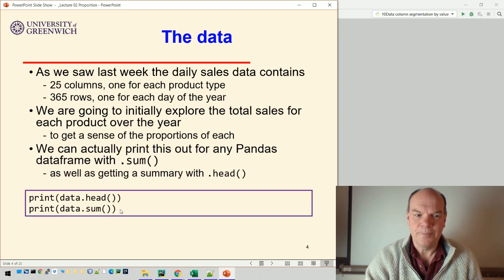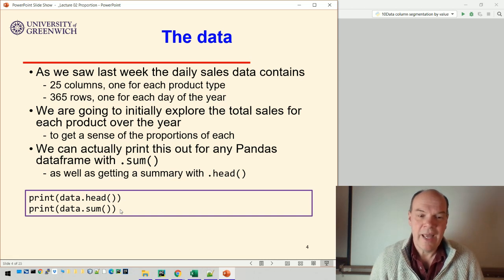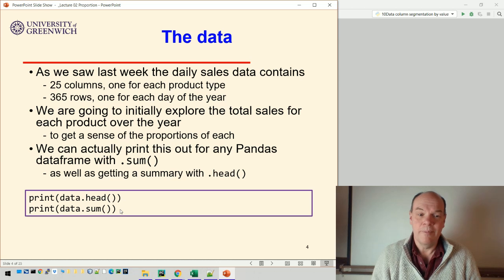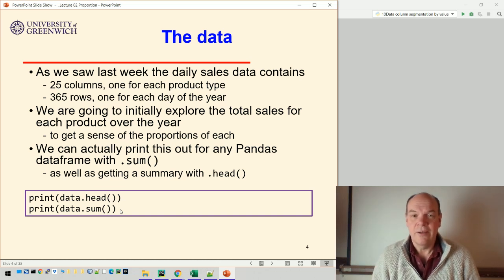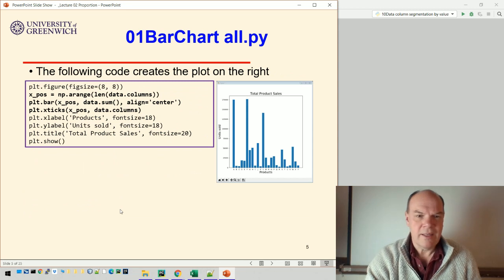As I said, we can just print this out. So you could just print out data.head, which gives you the first five rows of the data. data.sum - we could print out data.sum and we did that last week, and that just gives us the sum of all the values. That would be a very quick way of finding it, but it's not very visual.